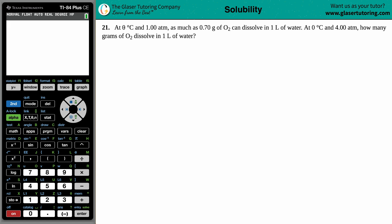Number 21. At 0 degrees Celsius and 1.00 ATM, as much as 0.70 grams of O2 can dissolve in one liter of water. At 0 degrees Celsius and 4.00 ATM, how many grams of O2 dissolved in one liter of water?